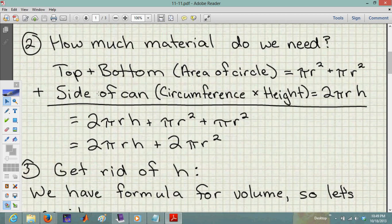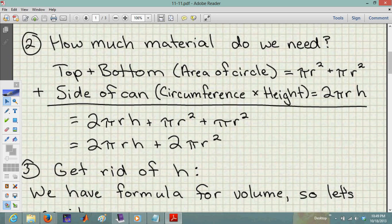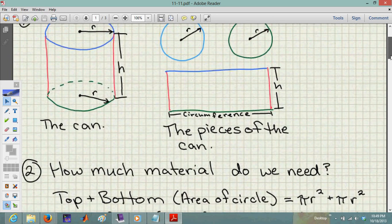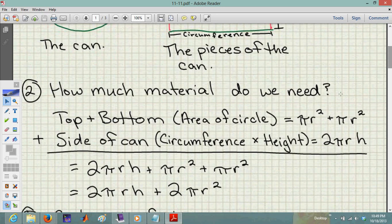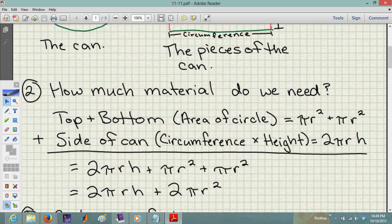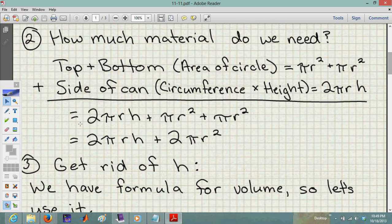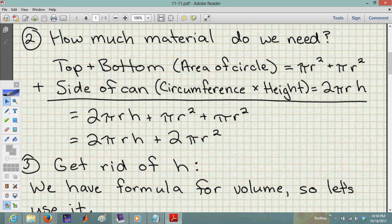How much material do we need? We need the top and bottom of the can - that's the area of a circle, and there are two of them, so πr² + πr². Then we add the side of the can, which is the circumference times the height: 2πrh. Adding those together gives 2πrh + πr² + πr², which simplifies to 2πrh + 2πr².